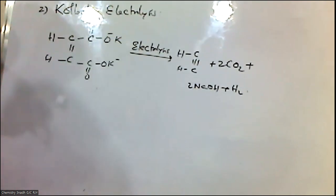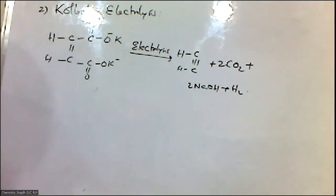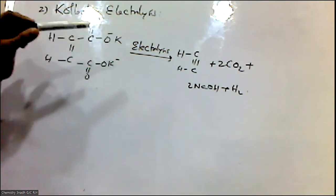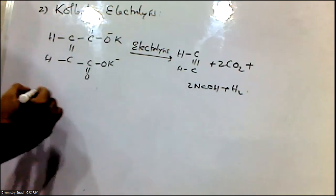Electrolysis of a solution of sodium or potassium salt of maleic acid or fumaric acid gives acetylene gas at the anode. We are calling this reaction Kolbe's electrolysis.